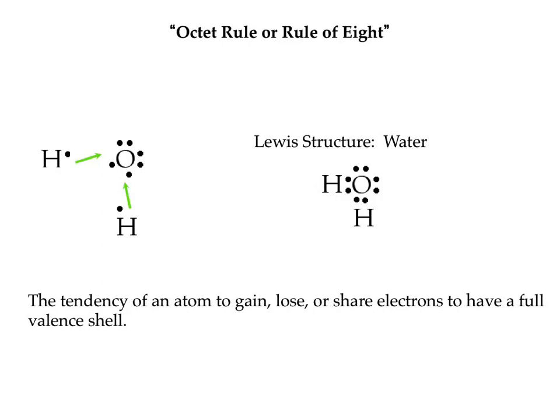Hydrogen's the exception for basically everything. So, how to draw these Lewis dot structures. Step one: count valence electrons for each atom in the molecule and add them together for a total — so you know how many dots to draw. Draw the central atom with its valence electrons. The central atom is not going to be hydrogen — period. Hydrogen is never the center. Most molecules have one atom in the center with others bonded around it.